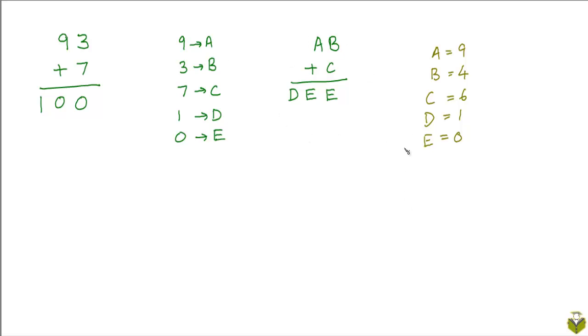So there are many different possible combinations of values for A, B, C, D, and E which all result in a correct arithmetic operation and from which we could have gotten the same encoding, the same letter encoding.